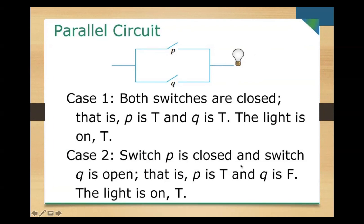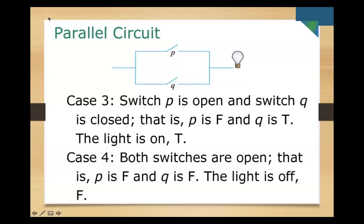Case two: switch p is closed and switch q is open — p is true and q is false — the light is still on. This corresponds to OR, a disjunction. Case three: switch p is open and switch q is closed — p is false and q is true — the light is still on, so true. Case four: both switches are open — p is false and q is false — the light is off.